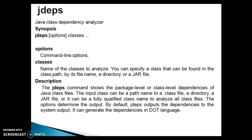The jdeps command shows the package-level or class-level dependencies of Java class files. The input class can be a path to a .class file, a directory, a jar file, or a fully qualified class name to analyze all class files. The options determine the output. By default, jdeps outputs the dependencies to system output. It can also generate the dependency in dot language.